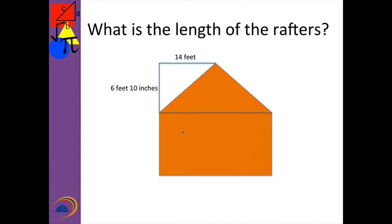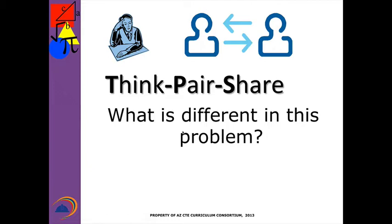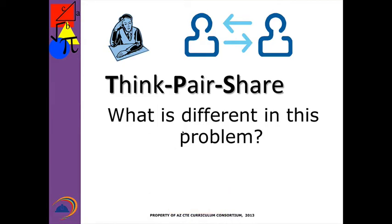Now we're going to a construction example. It's 14 feet in the horizontal direction of the roof and 6 feet 10 inches in the vertical direction. Add those to your note taker. What's different in this problem compared to anything we've done before? Teacher, pause the video. Welcome back. Some things that are different: this is an application problem dealing with the pitch of a roof and horizontal and vertical distances. It also has feet and inches instead of just feet, so we're going to have to deal with that.